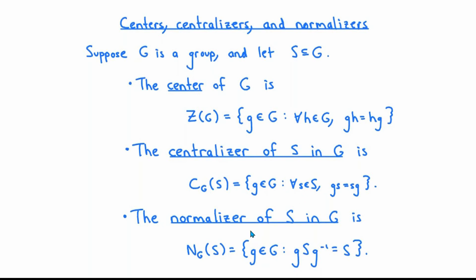And finally, the normalizer of S in G, denoted by N sub G of S, is the set of all elements g in G with the property that gSg inverse is equal to S. Remember that the notation gSg inverse denotes the set of all elements of the form g times little s times g inverse, where little s runs through the set S.